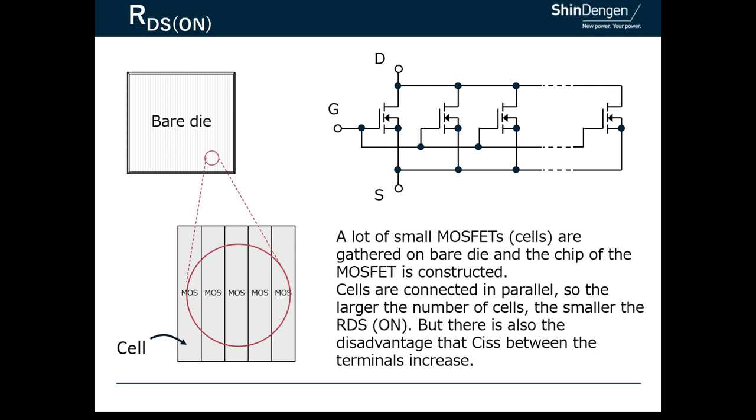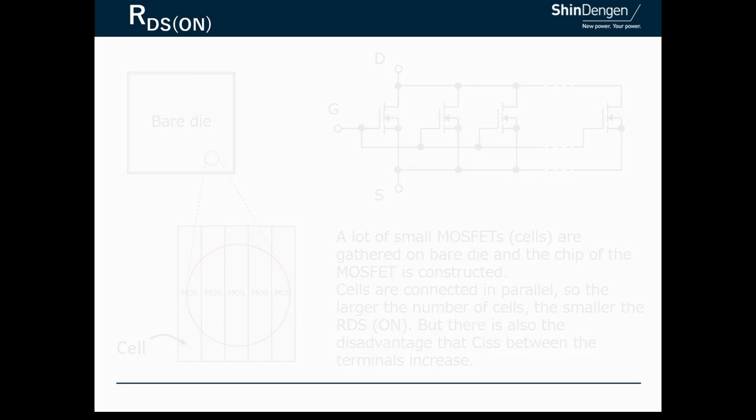But the capacitance between terminals such as CISS increases in proportion to the number of cells. Since the capacitance between terminals increases drive loss and switching loss, it is important to select the appropriate capacity like CISS, considering the balance with RDS(ON), according to the application.